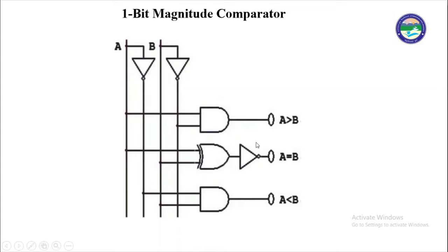The XNOR gate output A·B + Ā·B̄ gives the A equal to B case. For A less than B, the A input passes through a NOT gate giving Ā, and this is ANDed with B input, giving Ā·B, which gives the A less than B output. By using this circuit, we can compare two 1-bit values and determine whether they are equal, greater than, or less than each other.